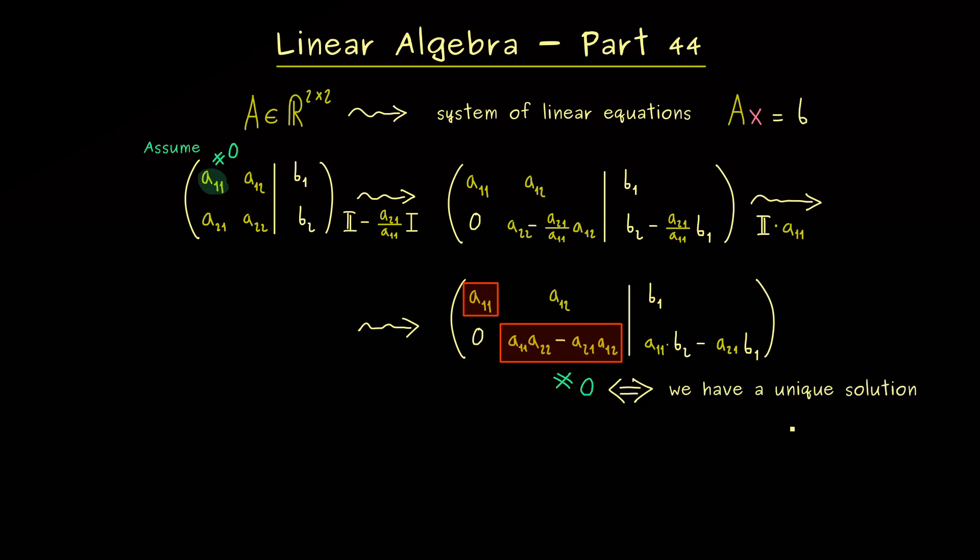In other words, that this entry is not zero is equivalent to the fact that we have two pivots. And there we have learned in the last videos that this means that we have a unique solution for the system of linear equations. Please note here we have a square matrix, so this is if and only if, no matter what the right-hand side is.